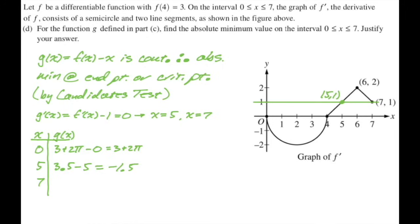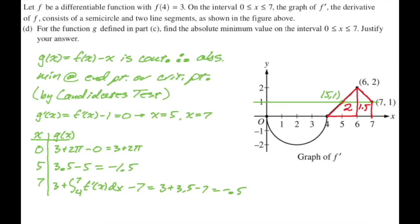f of 7 is 3 plus the integral from 4 to 7 of f prime. That region has area 3.5, so f of 7 is 3 plus 3.5 equals 6.5. Then g of 7 is 6.5 minus 7, which is negative 0.5. Comparing values, the absolute minimum is negative 1.5 at x equals 5.